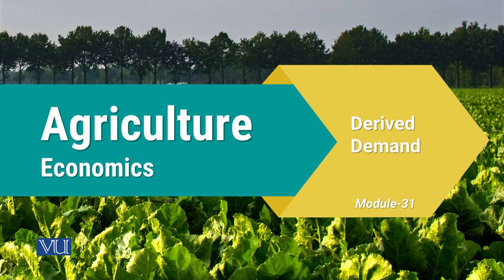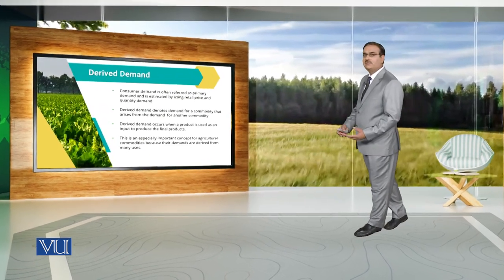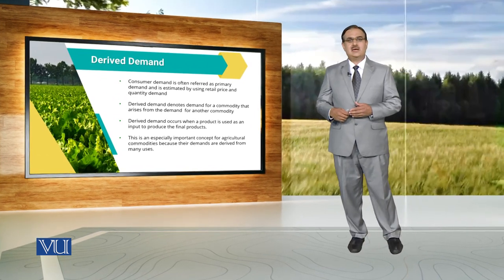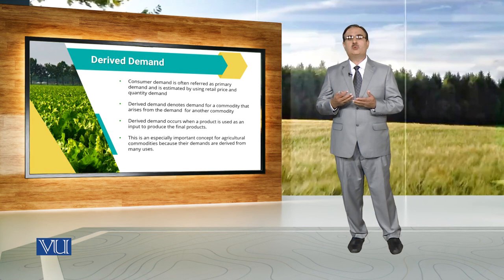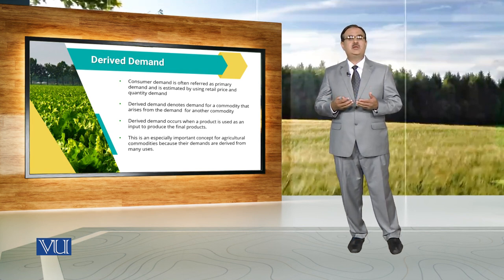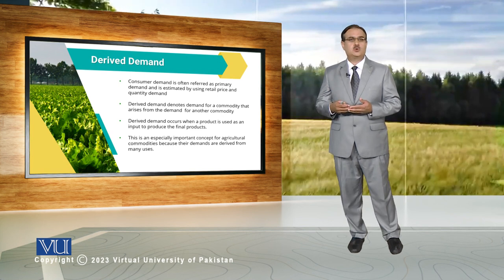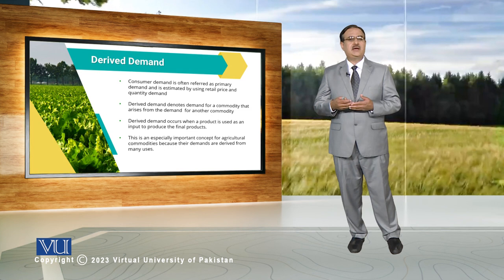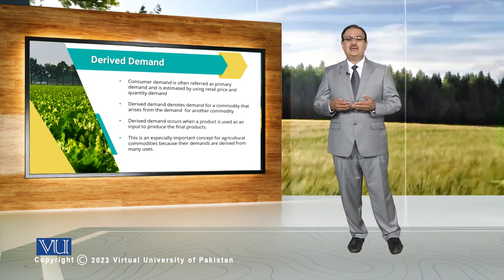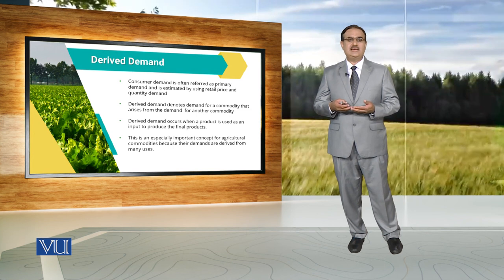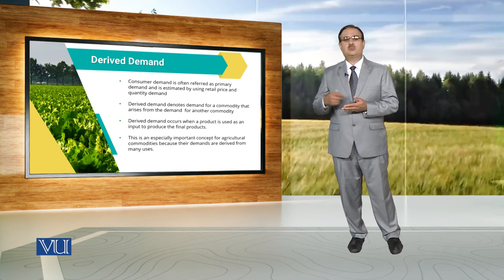Module 31: Derived Demand. When we talk about demand, usually we refer to primary demand for that particular commodity. Primary demand is the demand of the commodity — the relationship between quantity demanded and prices at retail level. But when we talk about Derived Demand, it denotes the demand for a commodity that arises from the demand for another commodity.